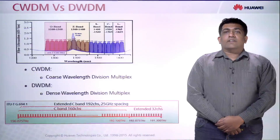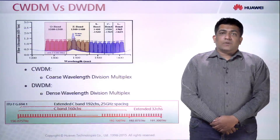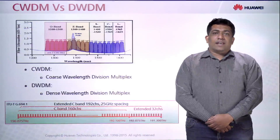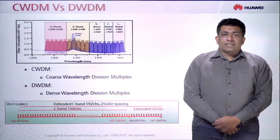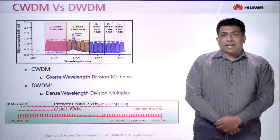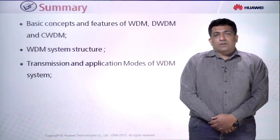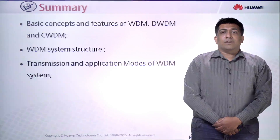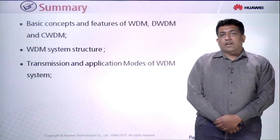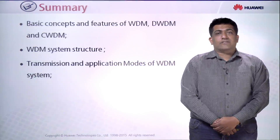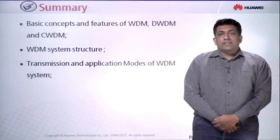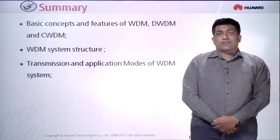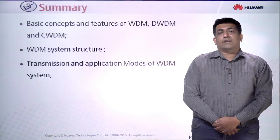Two technologies are available: CWDM and Dense WDM (DWDM). For DWDM, 80 lambdas are used and each lambda can carry up to 100 Gbps. In summary, the basic concepts and features of WDM, DWDM and CWDM have been explained, along with the component structure involved in the WDM environment. The transmission and application modes — unidirectional, bidirectional, open system and integrated system — have also been covered.